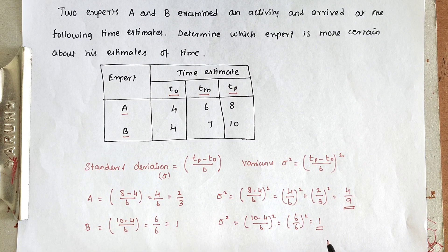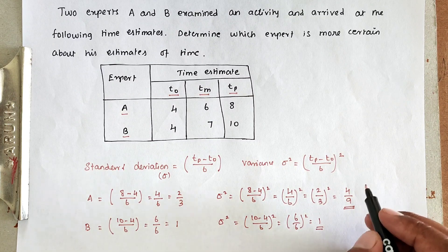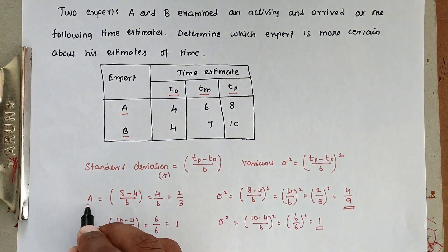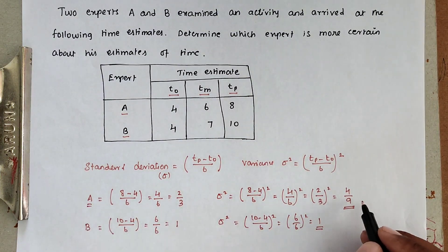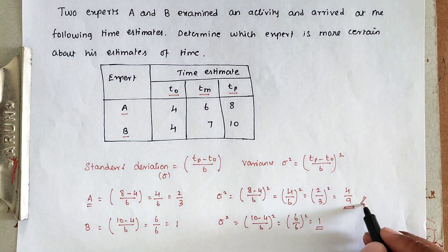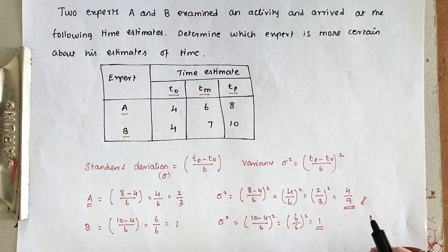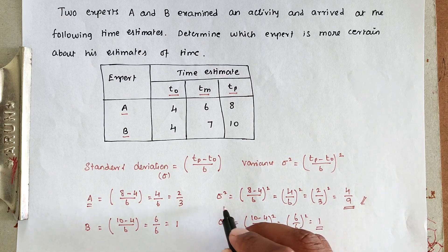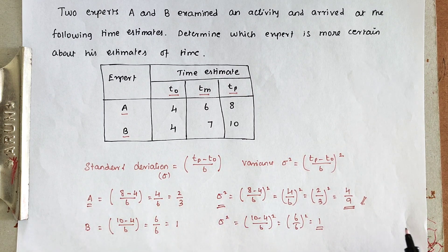Comparing the two, the variance for A is 4/9 and for B is 1. The variance is less in the case of Expert A, so we conclude that Expert A is more certain about his estimate of time. Expert A is the answer.